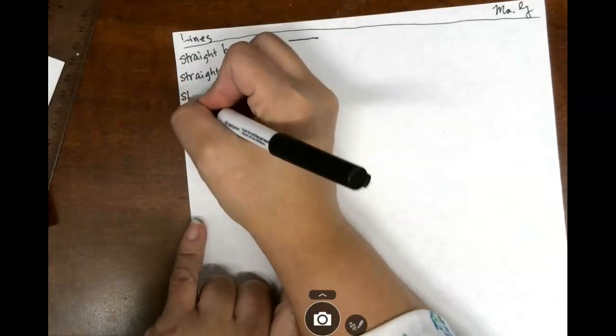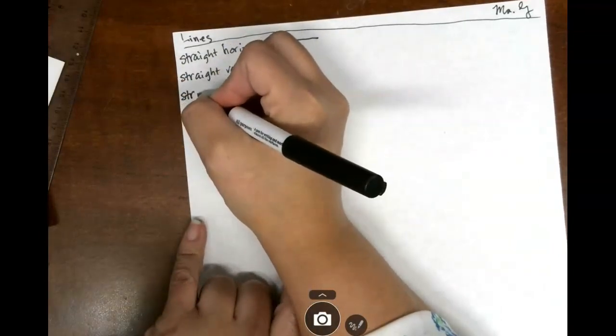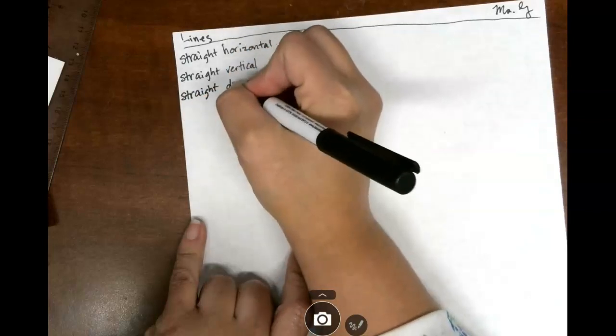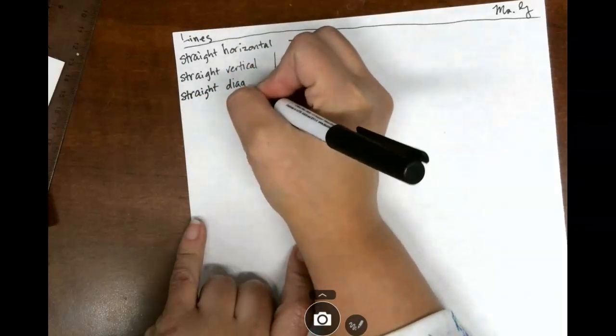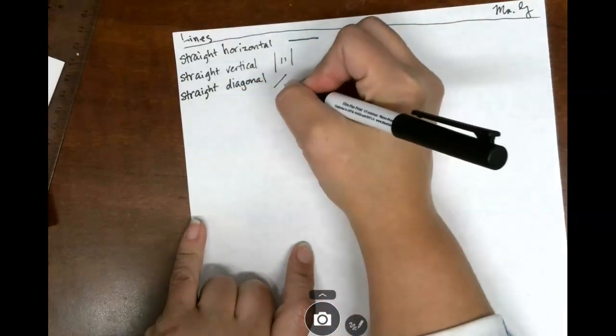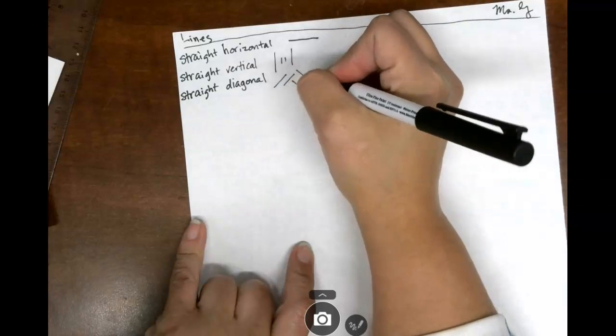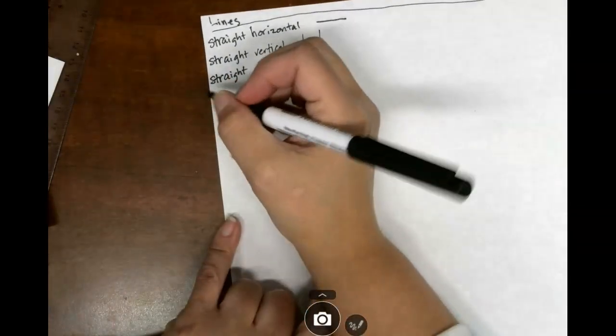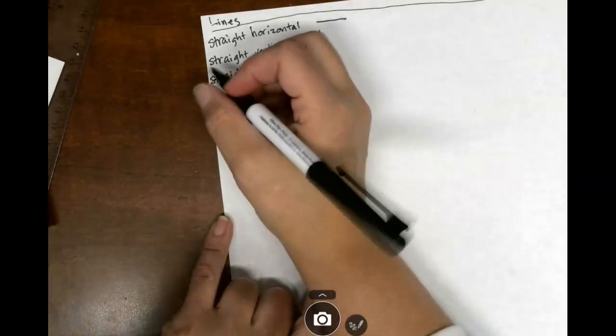Then we have straight, S-T-R-A-I-G-H-T, diagonal, D-I-A-G-O-N-A-L. And that's our lines that look like that. They're at an angle. Now we're going to get into a little bit different lines.